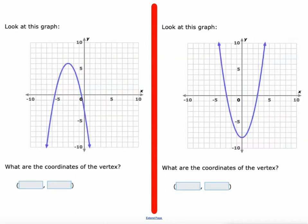Next, trying to identify the coordinates of the vertex — a very important point to locate on any parabola. That is right here. In this case, it's 3 to the left and 6 up, so negative 3, positive 6. On this one, it is right on the y-axis but 8 down, so 0, negative 8 are the coordinates of the vertex.